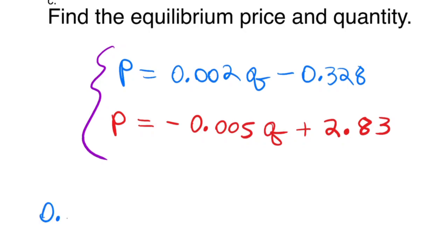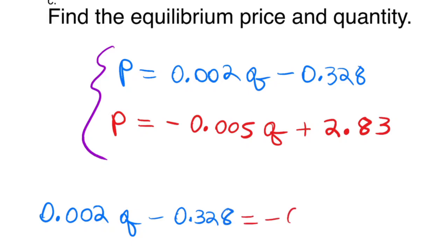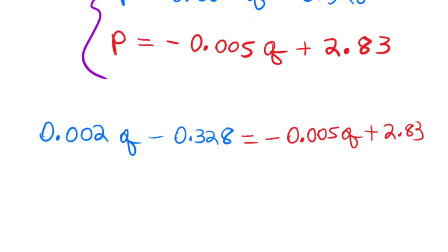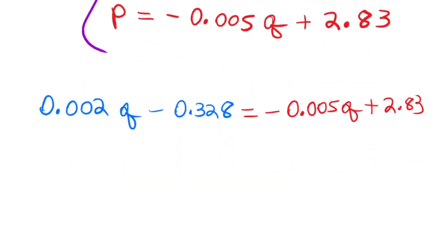Setting the equations equal to each other: 0.002Q minus 0.328 equals P, and that should equal negative 0.005Q plus 2.83. Then we just need to solve this equation for Q, which will give the equilibrium quantity.